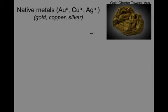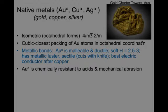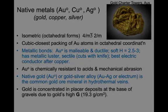Native metals include gold, copper, and silver — aurum, cuprum, argentum — the Latin words, hence the abbreviations for the metals. They form isometric octahedral forms, and the bonds are metallic, so gold is malleable and ductile. It's quite soft, with a hardness of 2.5 to 3, has a metallic luster, is sectile and cuts with a knife, and is the best electrical conductor after copper — silver is number three. Gold is chemically resistant to acids and mechanical abrasion, and it forms usually as native gold or gold-silver alloys as hydrothermal ores in veins. Gold is concentrated in placer deposits at the base of gravels due to gold's high specific gravity of 19.3 grams per cubic centimeter.